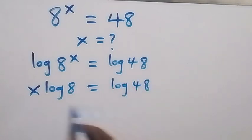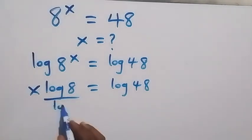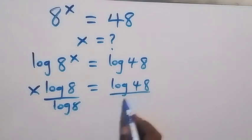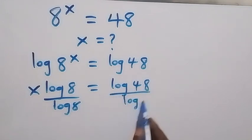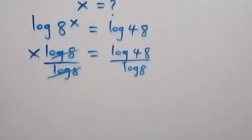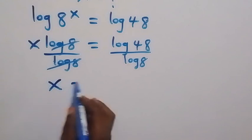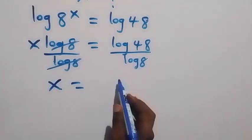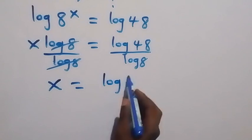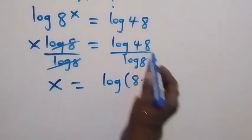In the next step, let's divide both sides by log 8. We divide this side by log 8 and also divide this side by log 8. Then log 8 cancels out and we are left with x, which is equal to log 48 over log 8.